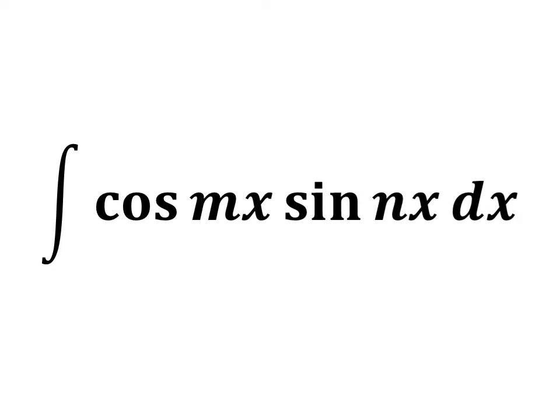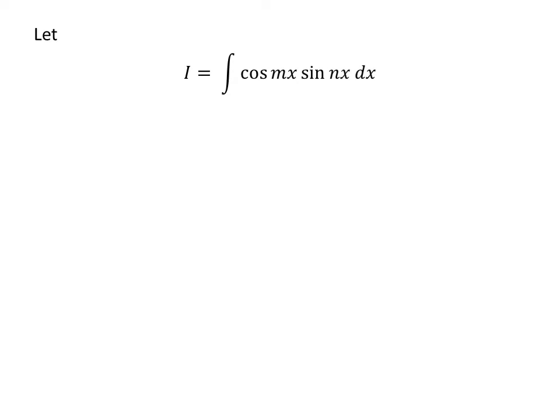In this video, we will learn to find the integral of the product of cosine of m times x and sine of n times x. Let us assume I is equal to the integral of cosine of m times x times sine of n times x with respect to x.